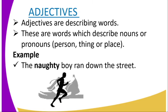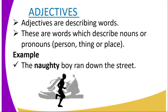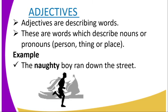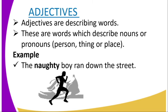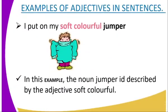They describe a person, a thing, or a place. For example: 'The naughty boy ran down the street.' Here, 'naughty' is an adjective which tells us more about the noun 'boy.' Another example: 'I put on my soft, colorful jumper.'